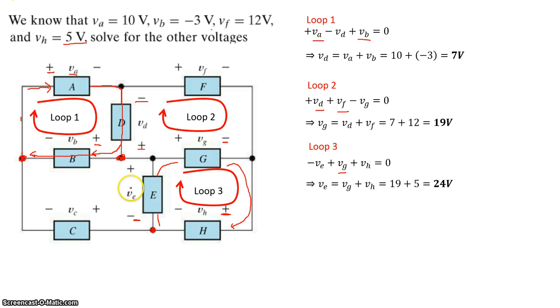Now we have one more loop to finish, and we need to know the value of one more voltage, which is VC. So let's take a look at loop four. In this loop, I'll start at this point right here. You can start at any point. So I'll start at this point and I'll traverse in the direction of that loop.